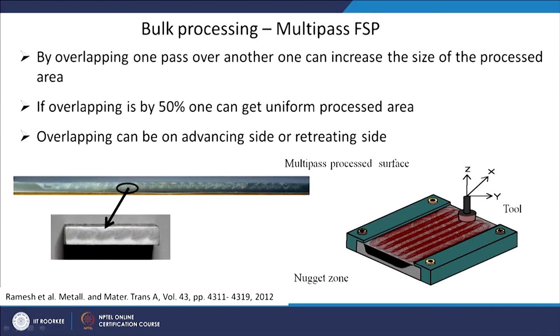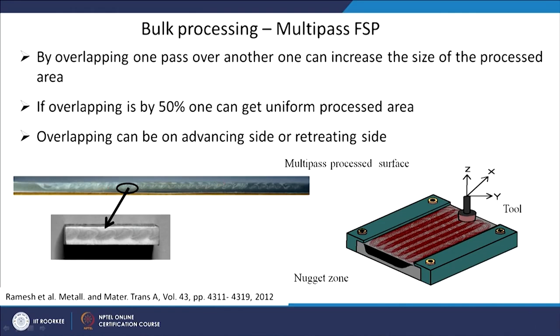In this multi-pass technique the overlapping was done by 50% on the retreating side — you can also do overlapping on the advancing side. You can see that a very large sheet is processed, and in a smaller sheet the effect of individual passes can be seen on the microstructure. A bigger cross-sectional volume is processed using the bulk processing technique. So you can easily extend the FSP technique as a bulk processing technique by doing multiple passes.